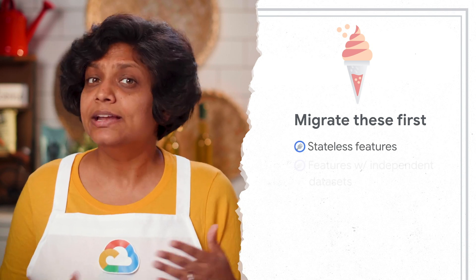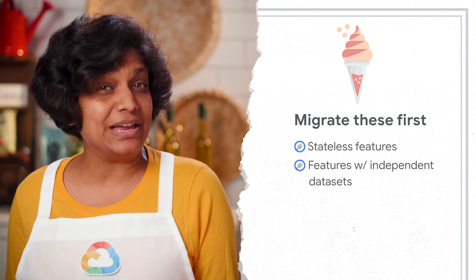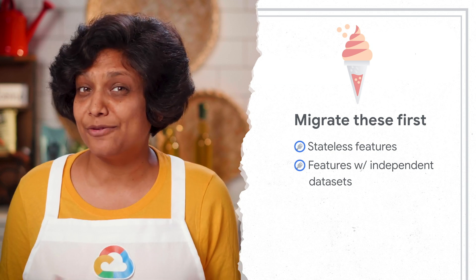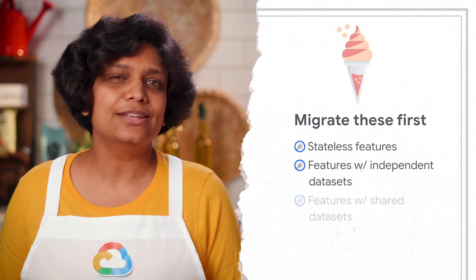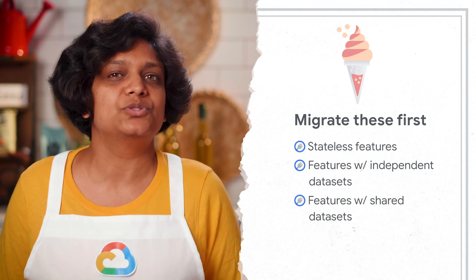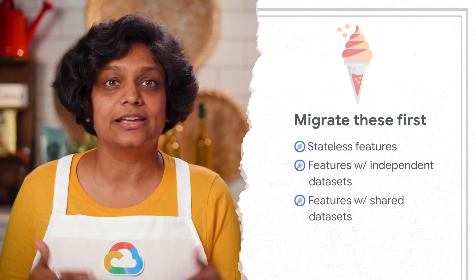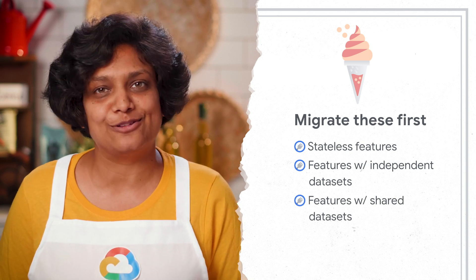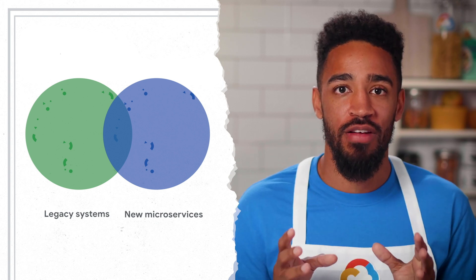Let's consider our friends at the iStream theory and their migration. Since they're thinking about a full migration of their website to microservices, a good migration order could be: migrate the front end first, then think about the stateless features. Next could be features with independent data sets, such as services that list their brick and mortar stores, and then finally come to features with shared data sets, like the business logic of the platform itself.